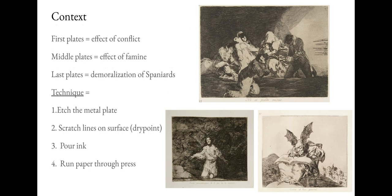The series is organized into three different sets of plates. The first ones depict the effects of the conflict itself. The middle plates show the effect of famine on people. And the last plates in the series of 82 capture the mindset of the Spaniards — how being under French rule for so long affects their mental state of being.